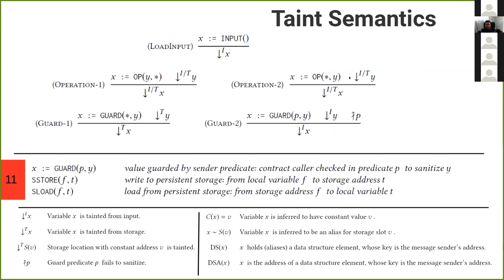Now let's look at the formalism of the tainter analysis. This formalism is over a very simplified representation of the code. The point here is not that we know how to do proper inter-procedural analysis — that we don't need to show. What we need to show is our unique twist, captured by key elements such as guarding, persistent taint in storage, data structures keyed on the sender, recursive vulnerabilities, and so on.